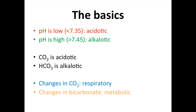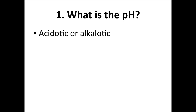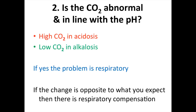When presented with a blood gas, first ask yourself: what is the pH — is it acidotic or alkalotic? Secondly, is the carbon dioxide abnormal and in line with the pH? Is the carbon dioxide high when the pH is acidotic? Is the carbon dioxide low when the pH is alkalotic? If yes, the problem is respiratory in nature. If the change is opposite to what you expect, there is respiratory compensation for a metabolic problem.